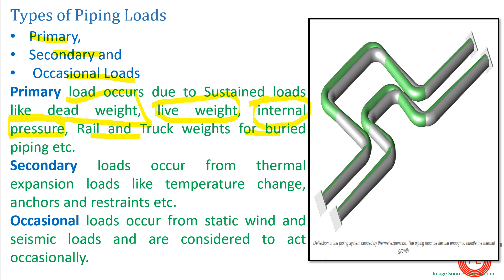For buried piping, vehicle movement on top of the pipe also causes loading. All these primary loads are generally present throughout the piping lifetime — dead weight, live weight, internal pressure during operation, and rail and truck loads due to vehicular movement above underground pipes.